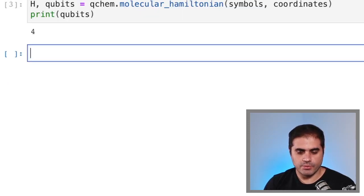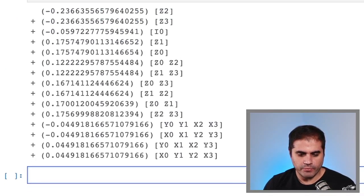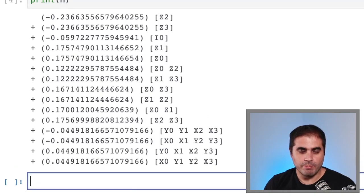We can also print H to see how it looks like. If we print it, we see that we get this very, very long thing, which would be painful to calculate by hand. So thank goodness that we have the qchem library.